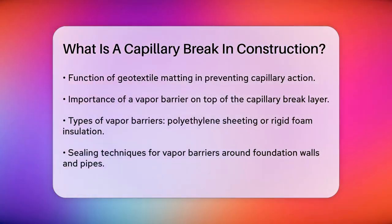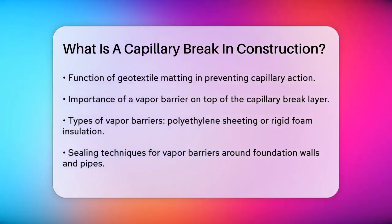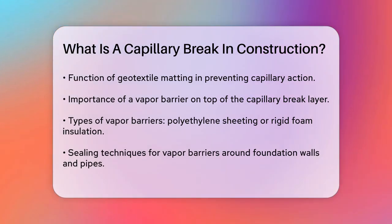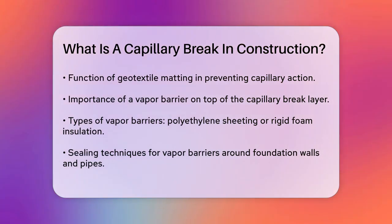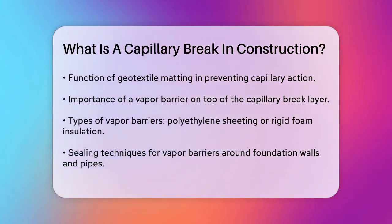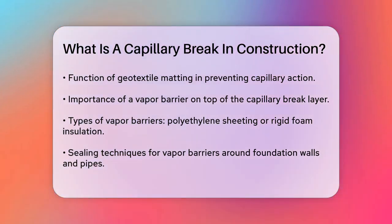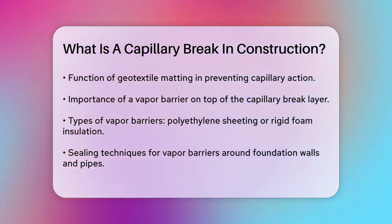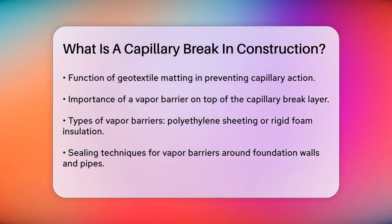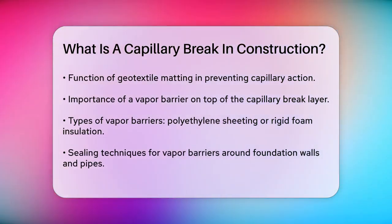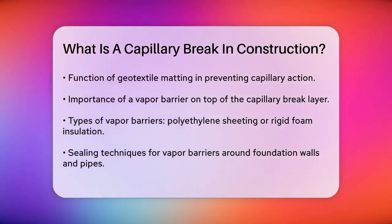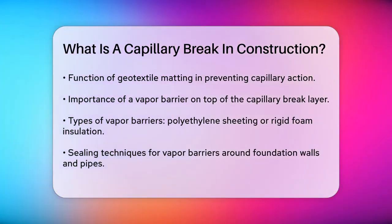On top of this layer, you install a vapor barrier. This can be a 6-mil polyethylene sheeting that is lapped 6–12 inches with sealed seams, or a one-inch extruded polystyrene rigid foam insulation with taped joints. These materials are sealed at the joints with the foundation walls and around any posts or pipes to ensure a continuous barrier.